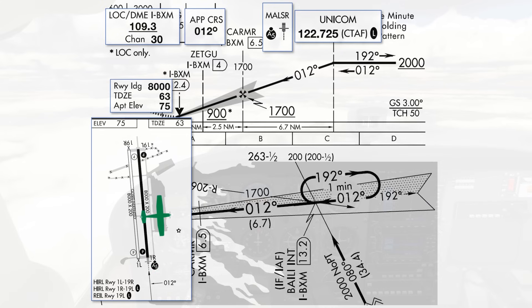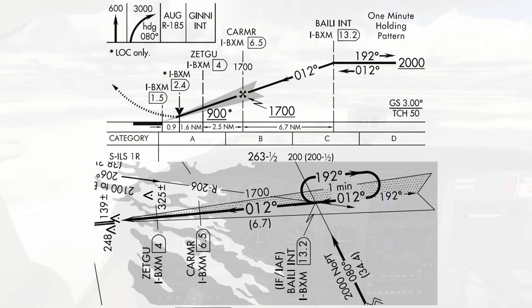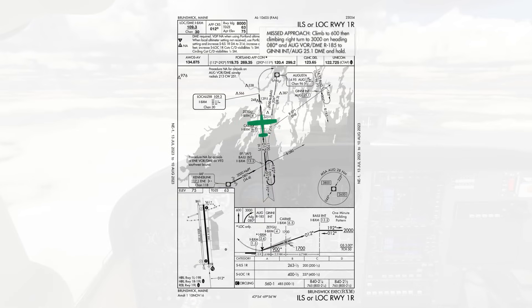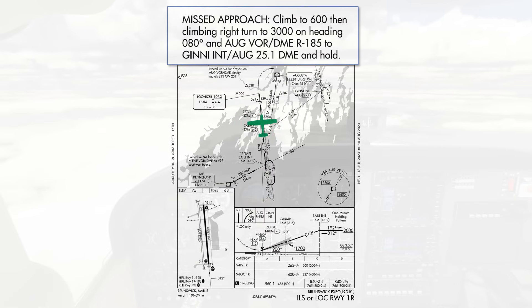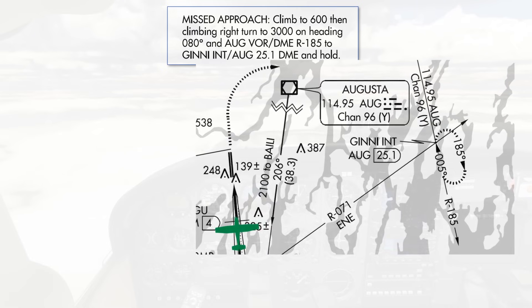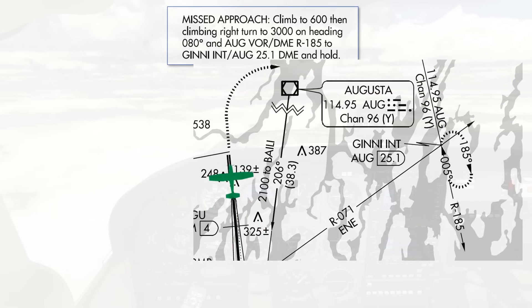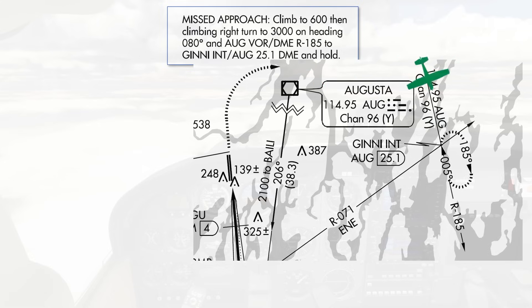We'll expect to exit right of the runway into parking. If we don't gain sight of the runway at the decision altitude, we'll immediately execute a missed approach: a straight-ahead climb to 600 feet, followed by a climbing right turn to a heading of 080 and 3,000 feet. From there, we'll intercept the 185 radial from the Augusta VOR. This is a new VOR, so we'll want to dial that into our NAV2 standby and set the OBS to 185 if we're not actively using it to navigate at the moment.